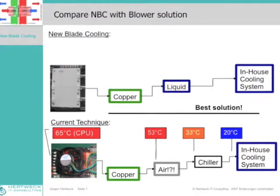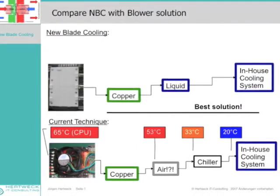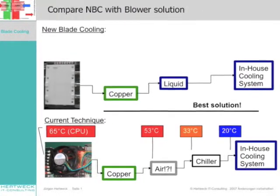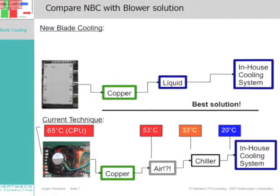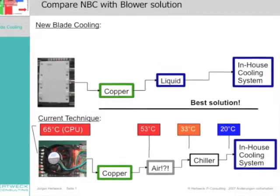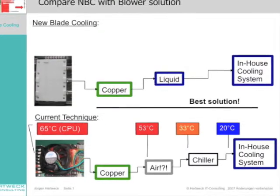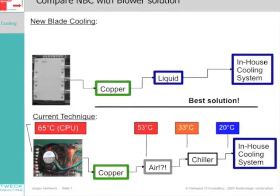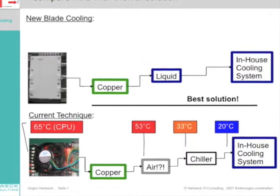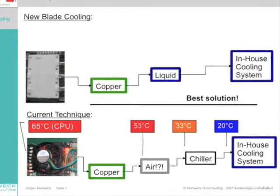Normally, the blade server has an air out streaming with a temperature of 53 degrees Celsius and this is cooled down by the water air chiller to 33 degrees Celsius before the air is streaming inside the server again. To achieve these values, the water air chiller has to be supplied with a water temperature round about 20 degrees.